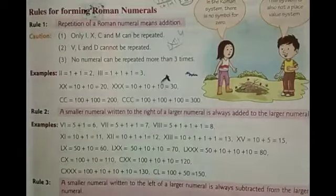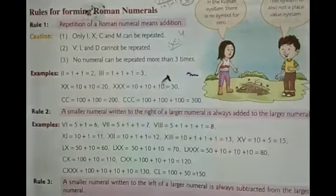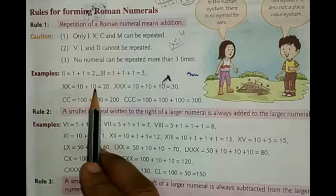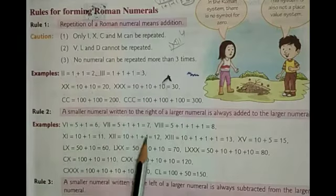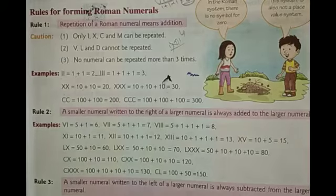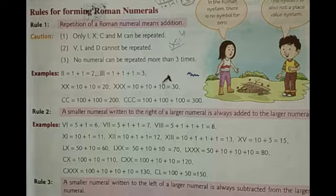For example: II means 1 plus 1, so that is 2. III means 3. XX means 10 plus 10, which is 20. And if there are three C's, that means 100 plus 100 plus 100, which equals 300.